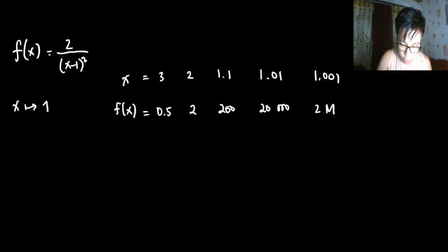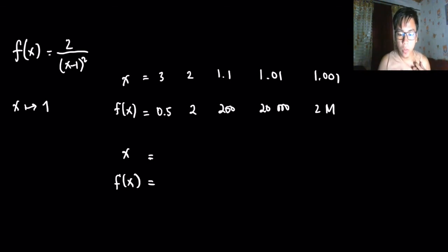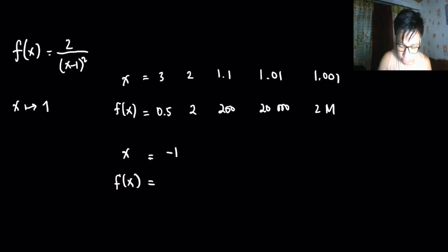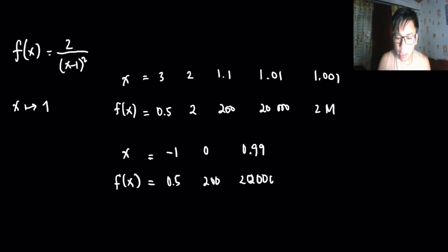Similarly, this time we will check on the left side part of x. We will also check on the values less than 1. Let's start with negative 1. When x is negative 1, f(x) is 0.5. When x is 0, f(x) is 2. When x is 0.99, f(x) is 20,000. And if x is 0.999, f(x) is 2,000,000.